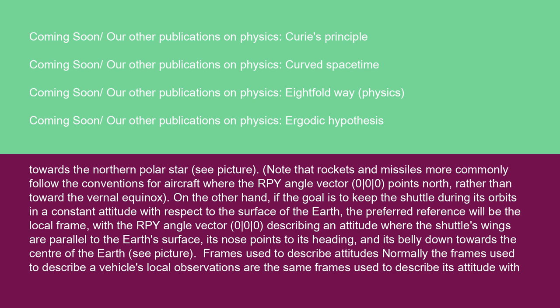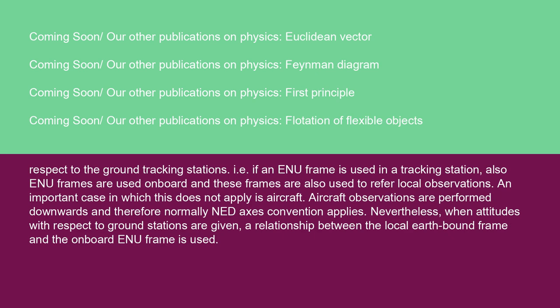Frames used to describe attitudes: normally the frames used to describe a vehicle's local observations are the same frames used to describe its attitude with respect to the ground tracking stations. That is, if an ENU frame is used in a tracking station, ENU frames are also used on board and for local observations. An important case in which this does not apply is aircraft. Aircraft observations are performed downwards, and therefore normally any down-axis (D-axis) convention applies. Nevertheless, when attitudes with respect to ground stations are given, a relationship between the local Earth-bound frame and the onboard ENU frame is used.